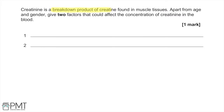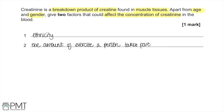Creatinine is a breakdown product of creatine found in muscle tissue. Apart from age and gender, factors that could affect the concentration of creatinine in the blood include: ethnicity, the amount of exercise a person has done, body mass or muscle mass, and kidney disease — if kidneys can't filter creatinine from the bloodstream, levels will be elevated, indicating the kidneys aren't working properly.